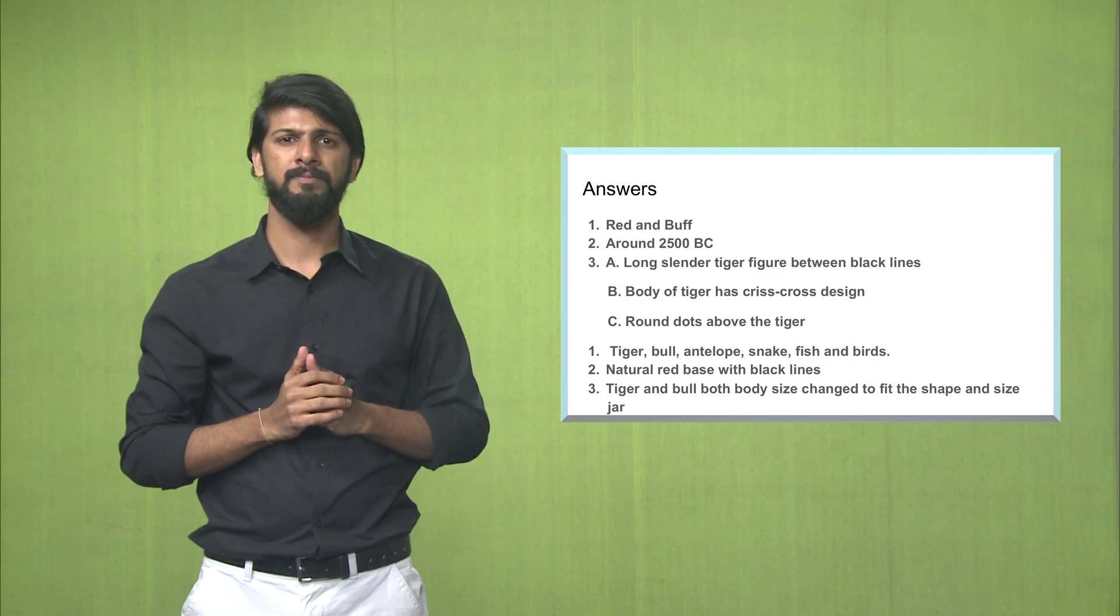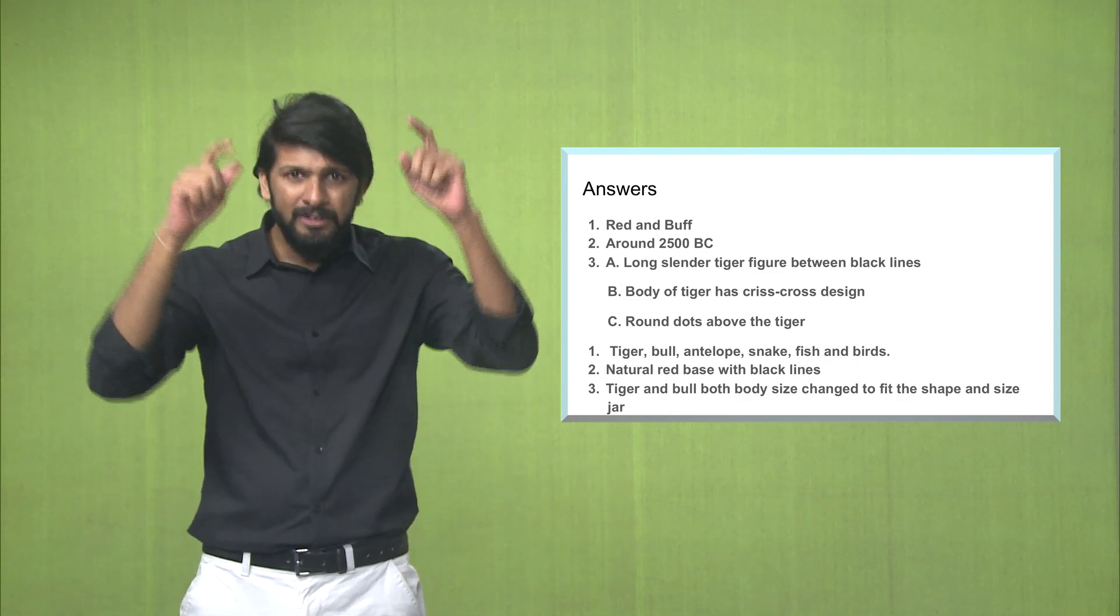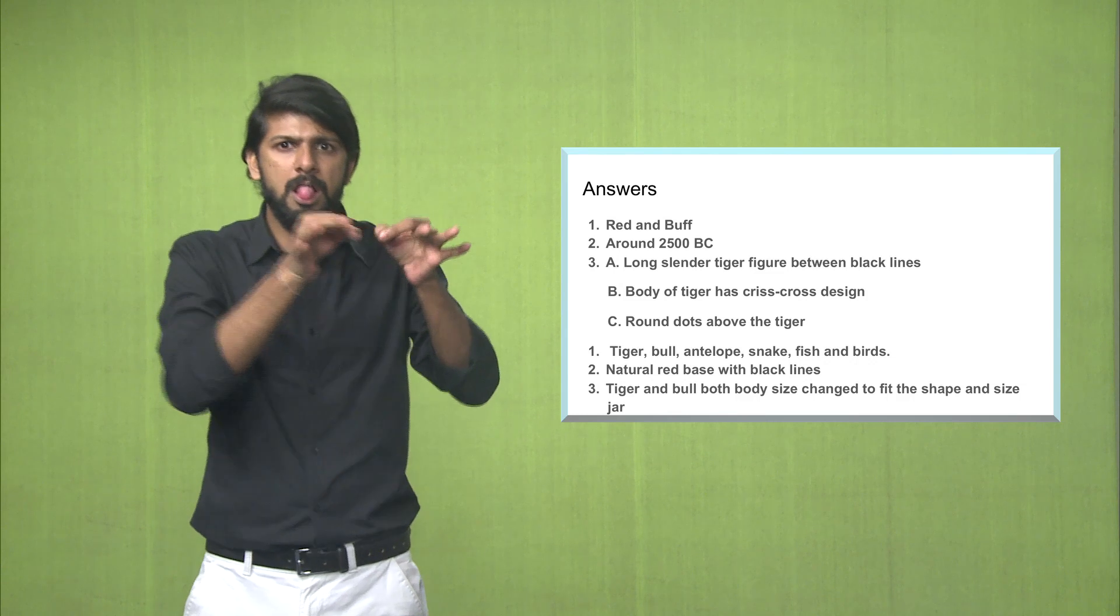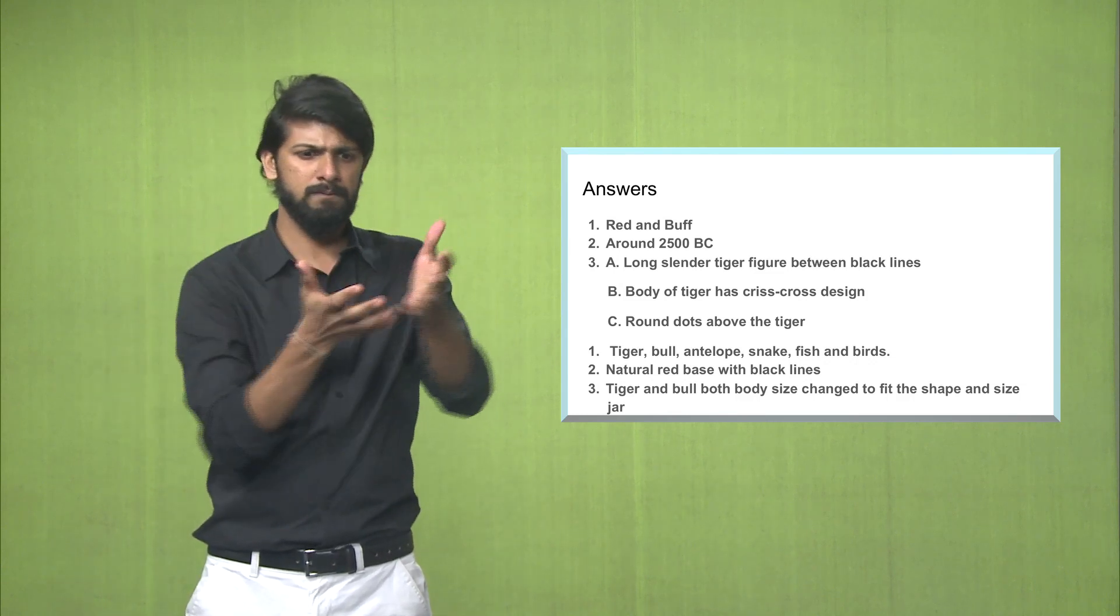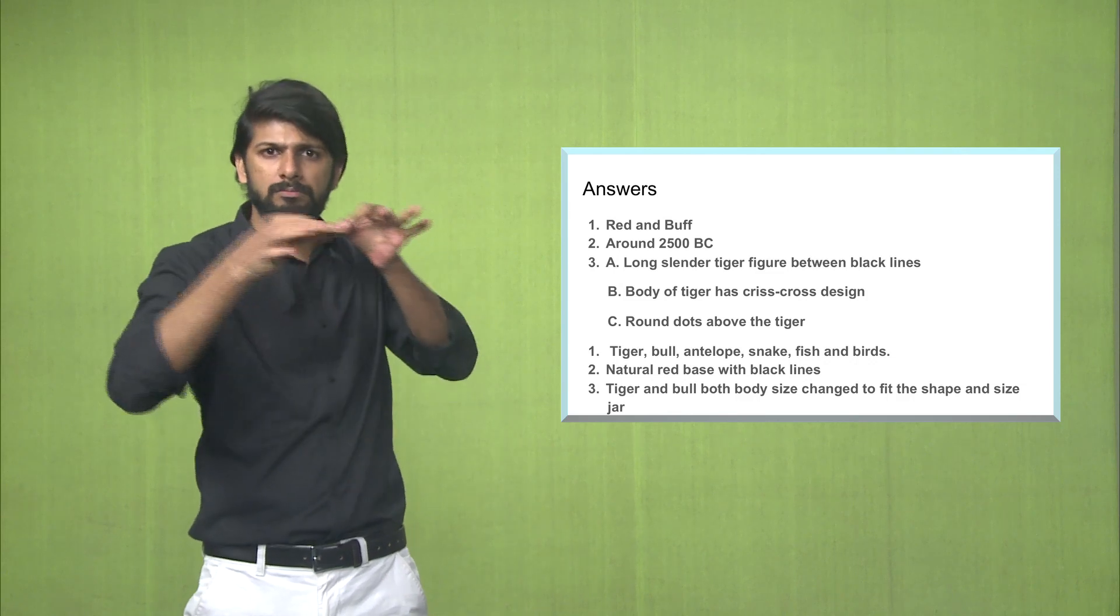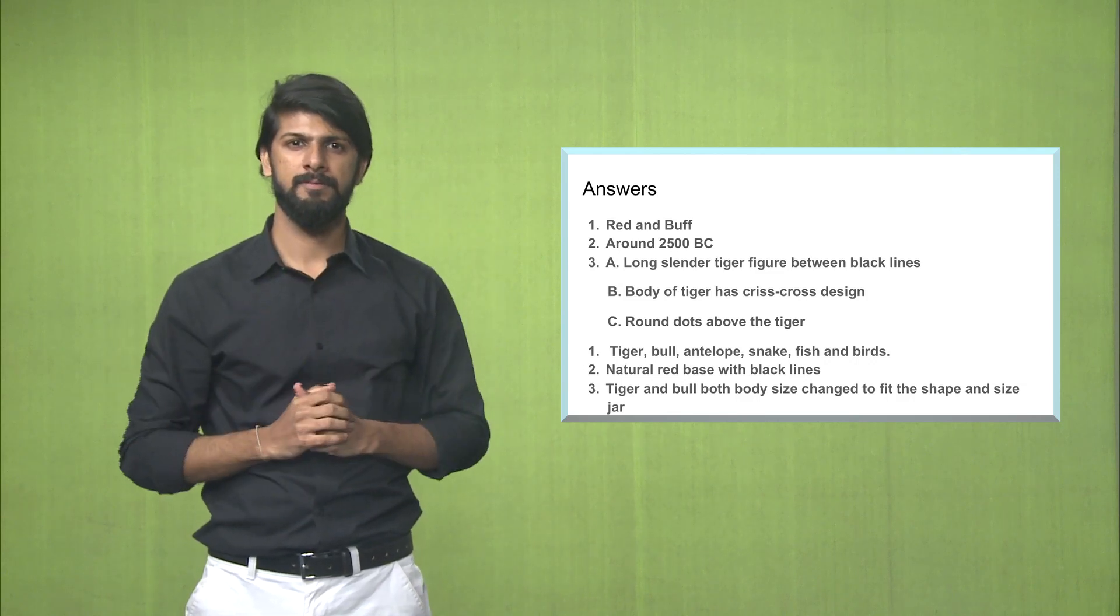Answer number six, the tiger and the bull which have been depicted on the two jars, the body of both animals has been changed to fit the shape and size of the jar.